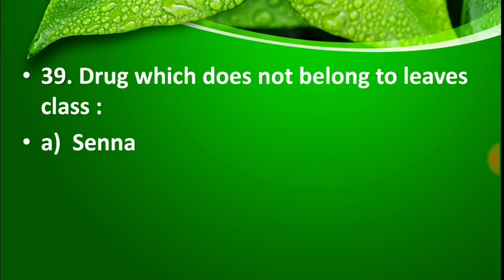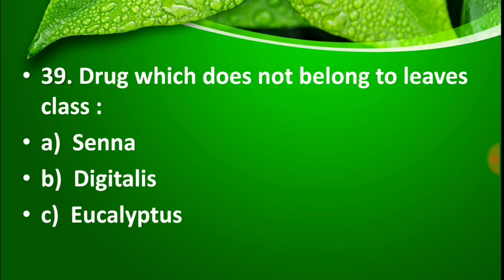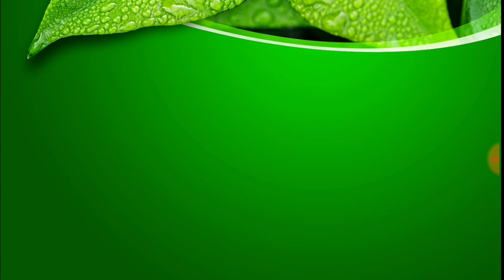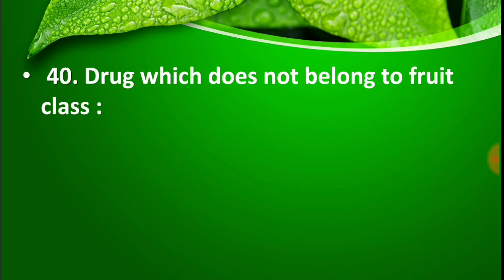Question number 39: Which drug does not belong to the leaves class? Option A: Senna, Option B: Digitalis, Option C: Eucalyptus, Option D: Turmeric. The right answer is Option D, Turmeric, because turmeric's roots and rhizomes are used, while Senna, Digitalis, and Eucalyptus leaves are used — so they belong to the leaves class, while turmeric belongs to roots and rhizomes.